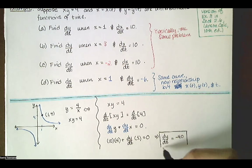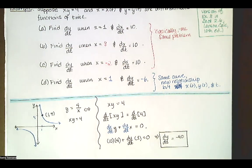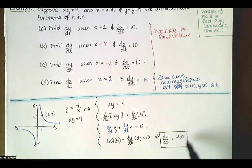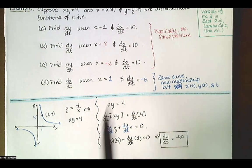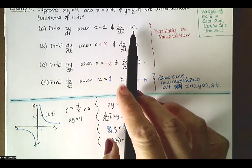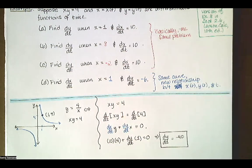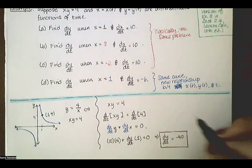Our y values are decreasing at 40 units per unit time when our x values are increasing at 10 units per unit time at that location. That's using implicit differentiation.